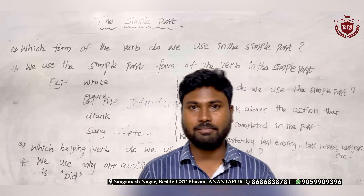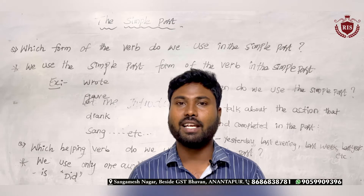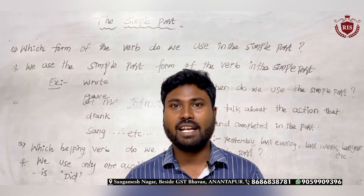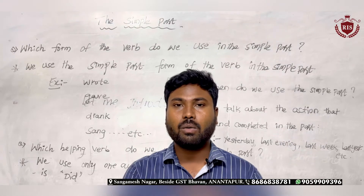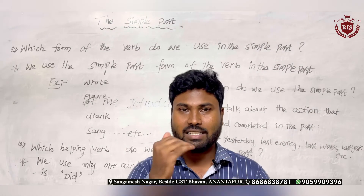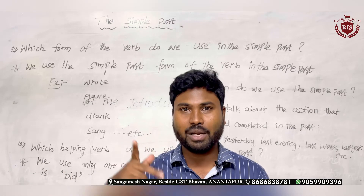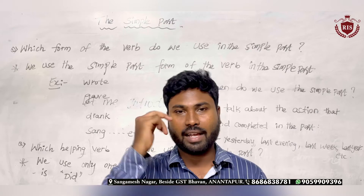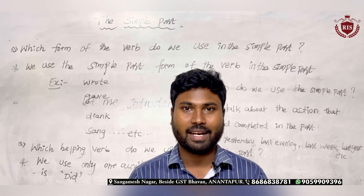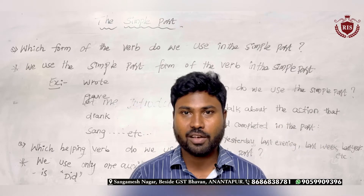What are those types? One is regular and the other one is irregular. Let us revise regular and irregular briefly. I asked you to write some regular verbs and some irregular verbs — around 50 regular and 50 irregular as homework.